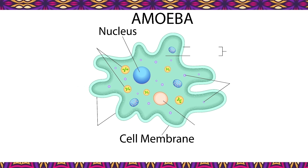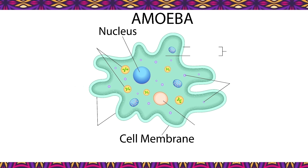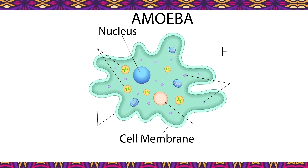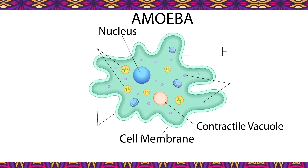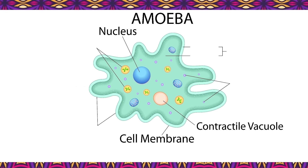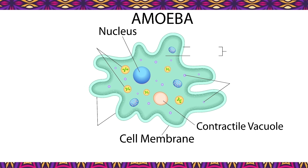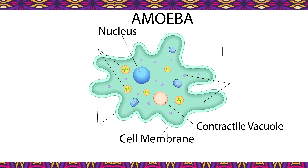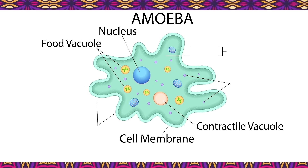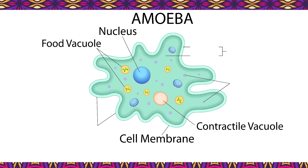Vacuoles: these are air sacs in the cytoplasm of amoeba. There are three types of vacuole in amoeba, each carrying out different functions. Contractile vacuole: contractile vacuoles regulate the osmotic pressure by pumping water out of the cell through a process called osmoregulation. It's also important to note that the contractile vacuoles can contract and expand. Food vacuole: these are non-contractile, have a fixed shape, and are of different sizes. These contain food ingested by the amoeba.